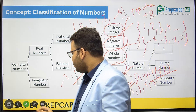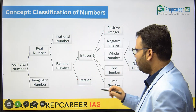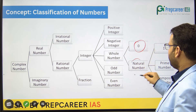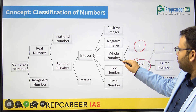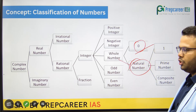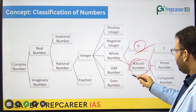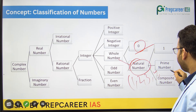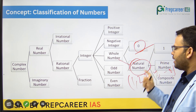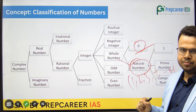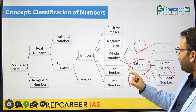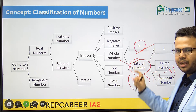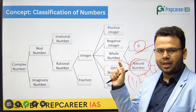Further, we will classify whole numbers. Whole numbers can be classified as 0 and natural numbers. The only difference between whole numbers and natural numbers is the presence of 0. Natural numbers start with 1 and go like 2, 3, 4 till infinity — you will not find 0 in natural numbers. Whereas in whole numbers, you will find 0, since whole numbers start with 0 and go till positive infinity.